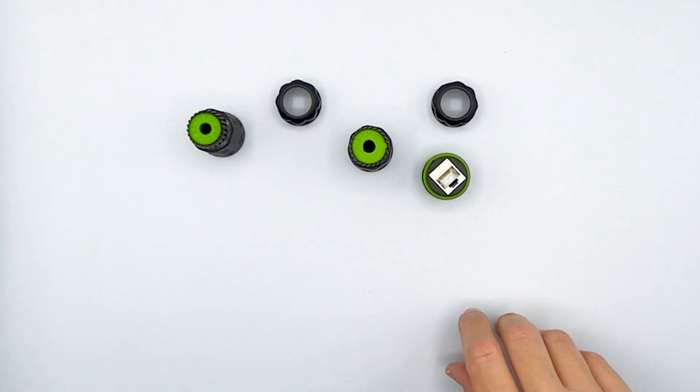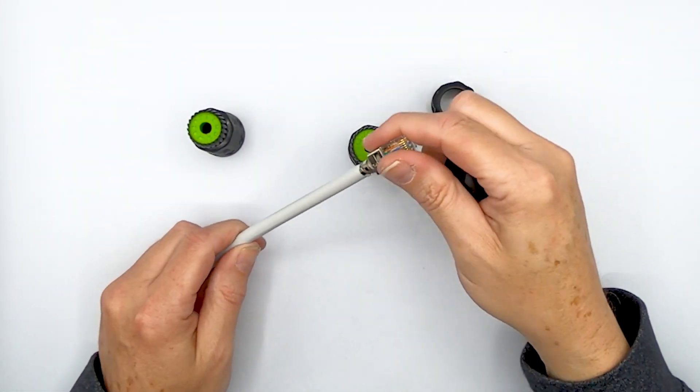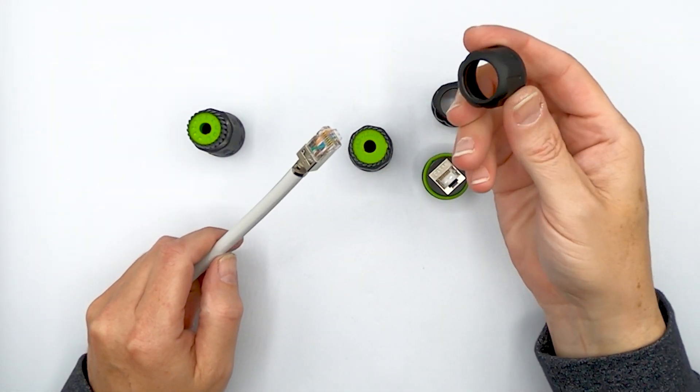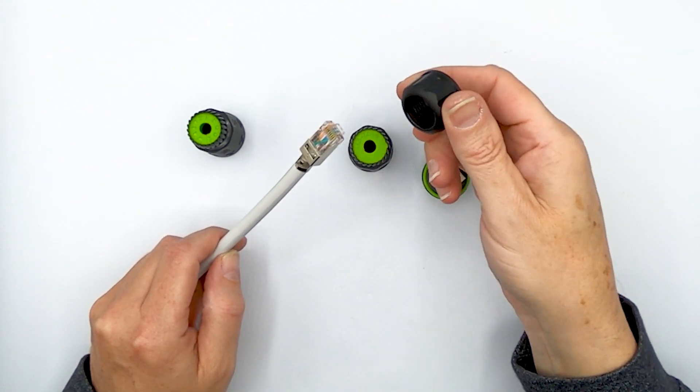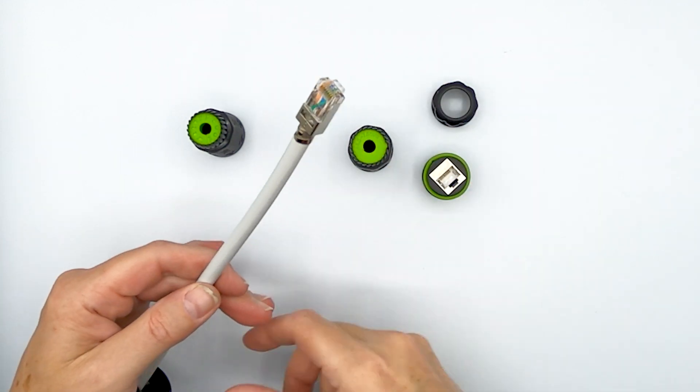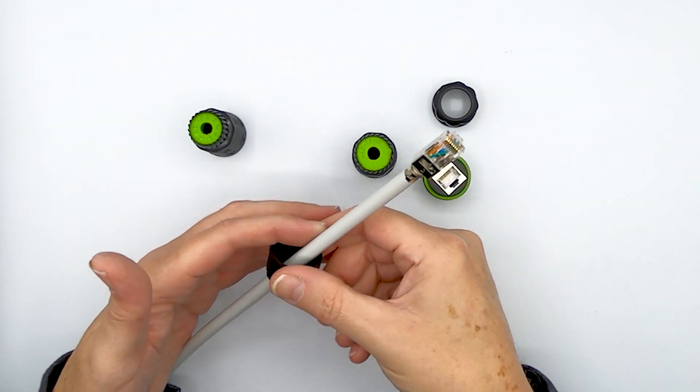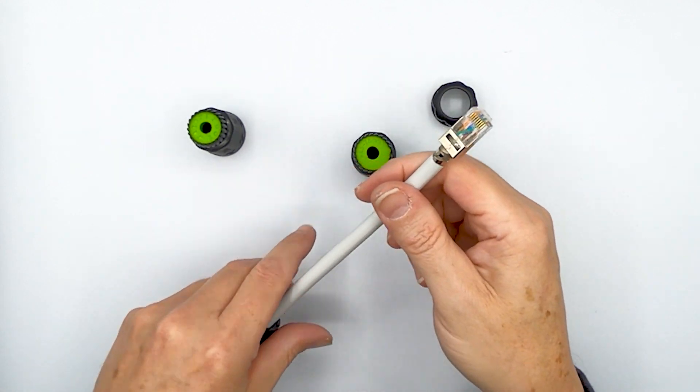And so the way you actually put a cable onto this is first, we're going to use a shielded cable as an example here. You take the end of the coupler, unscrew it off first, and you put that down first. Don't forget that step, okay? Otherwise, you'll find yourself in a situation where you have to try it again. So that goes first.